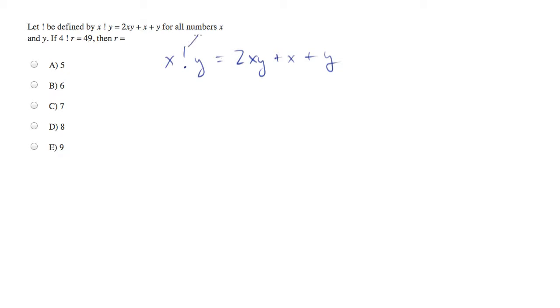This operator, the exclamation point, means nothing. It's not a factorial, it's not anything special. All it is is some kind of operator that has two inputs.